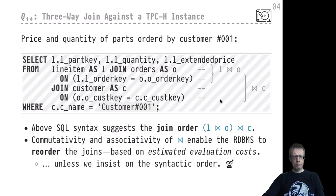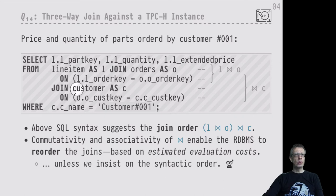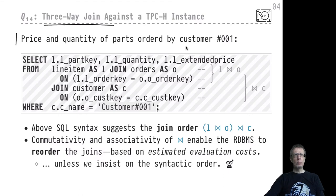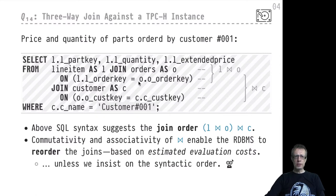The first query we look at is a three-way join query over the TPC-H database, mentioning tables like line_item, orders, and customers. We are looking for the quantity of parts ordered by one particular customer — customer 001 — specifically the quantity and price of parts ordered by that customer. To do that we need the line_item, orders, and customers tables. I've chosen to use explicit JOIN syntax in PostgreSQL for one particular reason: the JOIN syntax allows me to prescribe a particular join ordering that PostgreSQL has to follow.